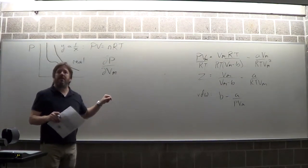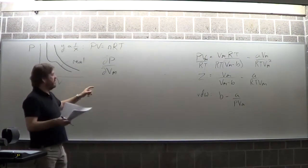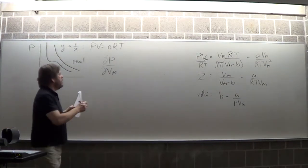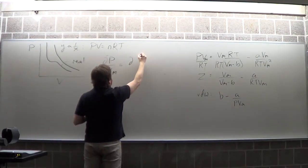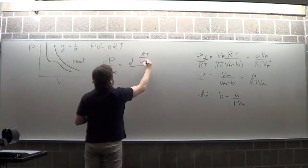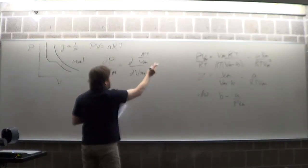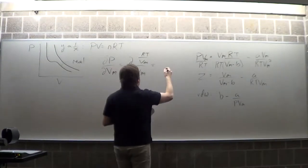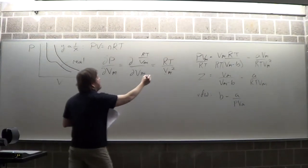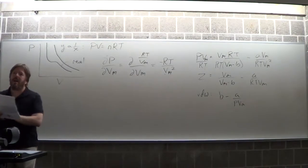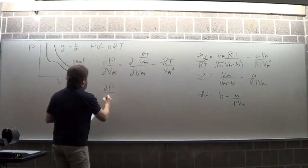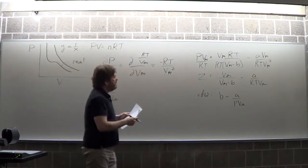For a perfect gas, dP/dV_M = −nRT/V² (using V_M here). For the Van der Waals equation, the derivative includes a term from 1/(V_M − B) in the denominator: you get −RT/(V_M − B)² plus 2A/V_M³. Then you have to show you can do some basic algebra with the Van der Waals equation.